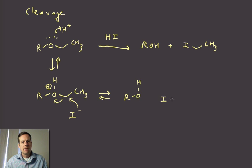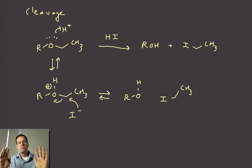And what can happen here is that this highly nucleophilic iodide can actually kick off the alcohol portion. So we get R-O-H, and then we will get to our alkyl iodide. So it's a fairly straightforward type of reaction. And this requires a very strong acid and a very nucleophilic iodide.